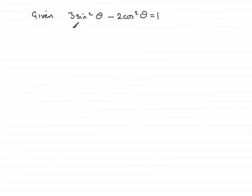In this question we're given that 3 sine squared theta minus 2 cos squared theta is equal to 1, and asked to show that 5 sine squared theta equals 3.